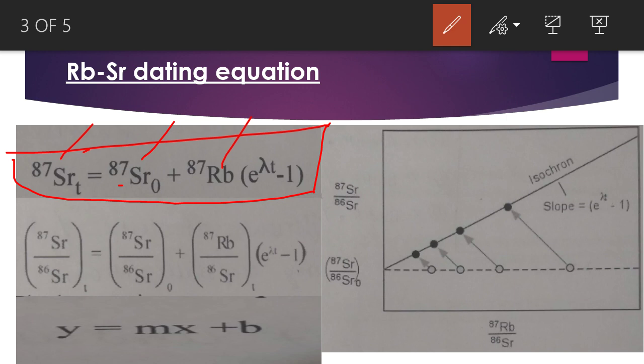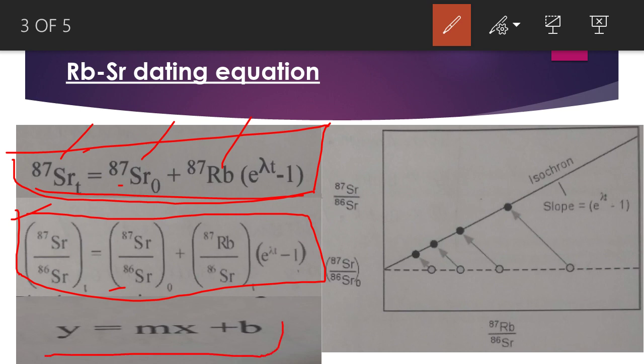In the case of strontium, you have strontium-87 as well as another isotope, strontium-86. If you divide this whole equation by strontium-86, you will find an equation something like this. This looks like y equals mx plus b, a simple equation for a line.